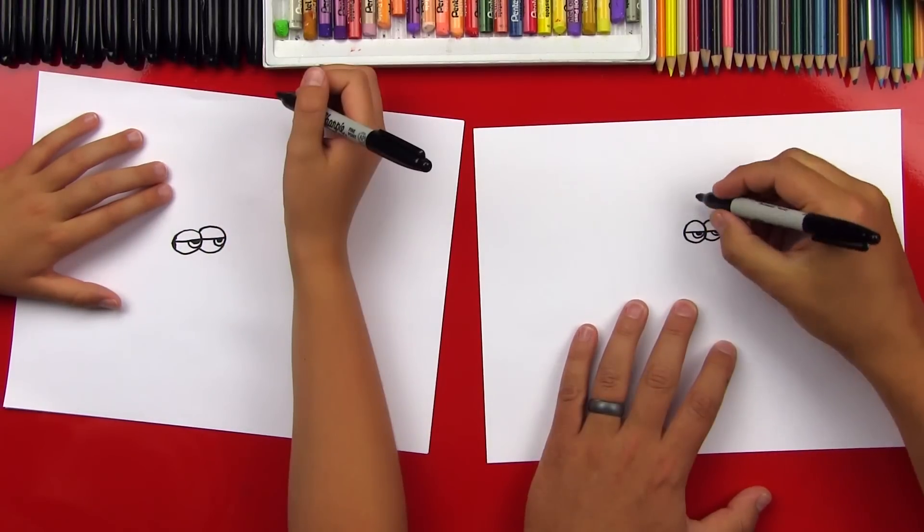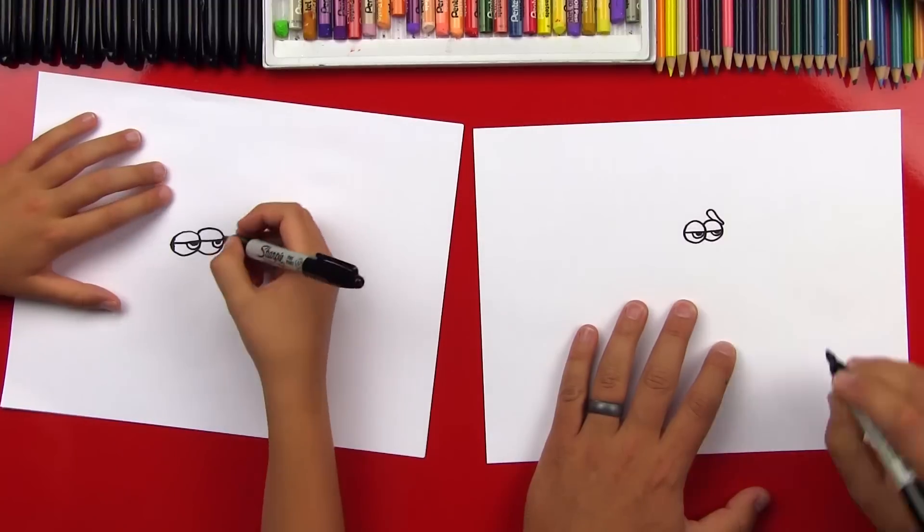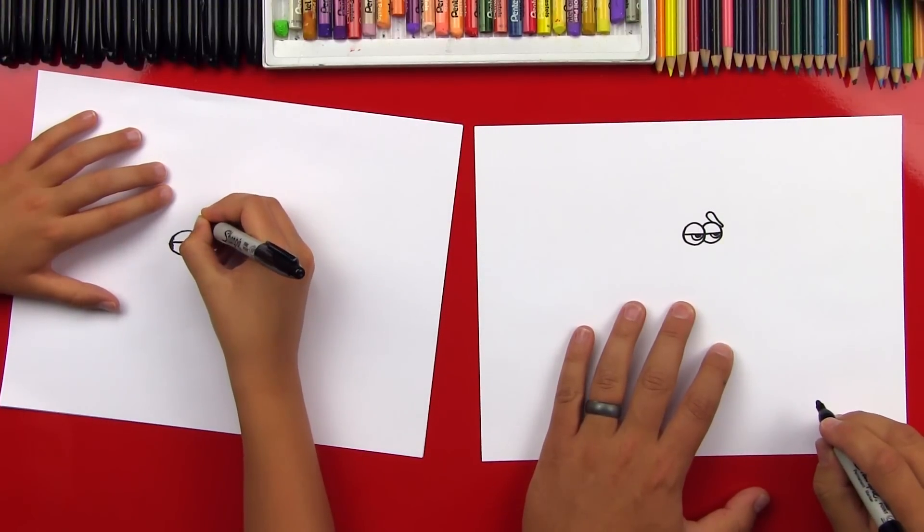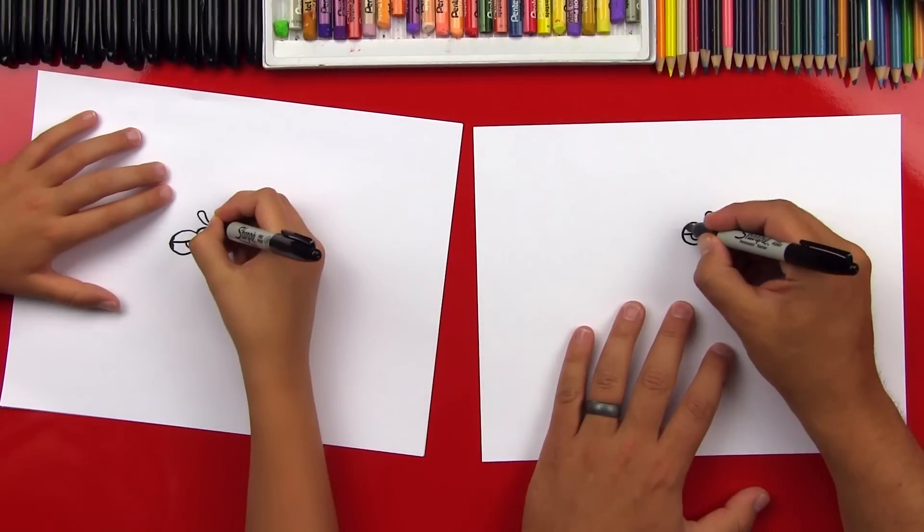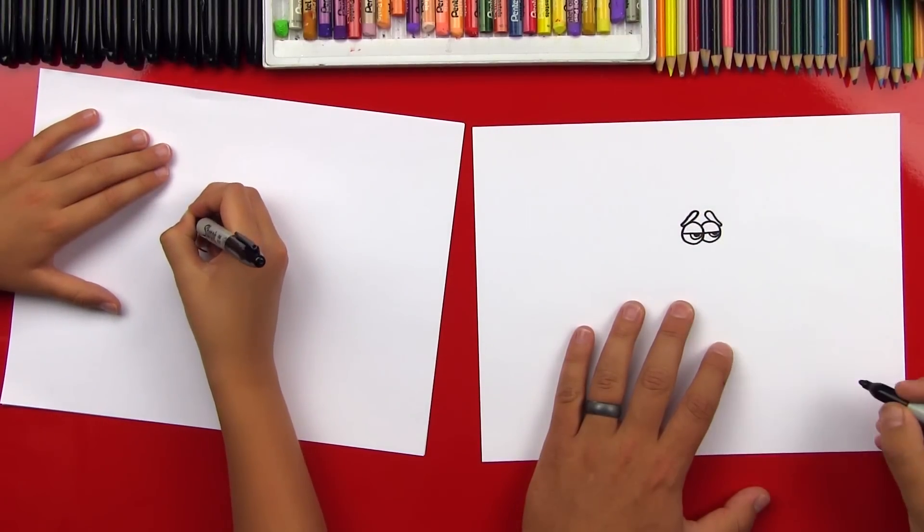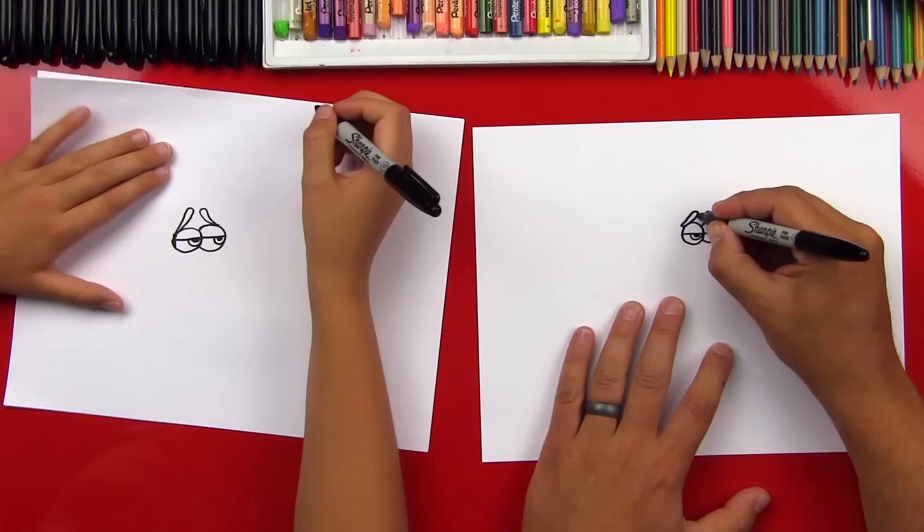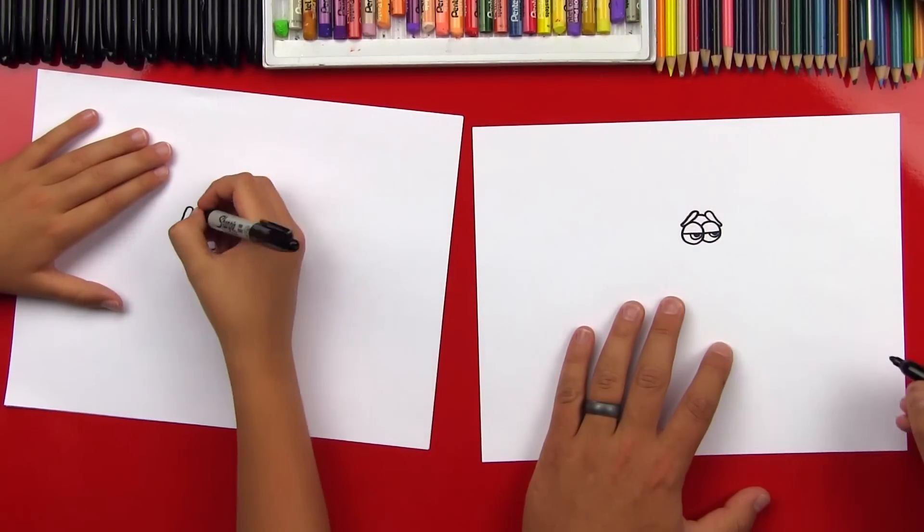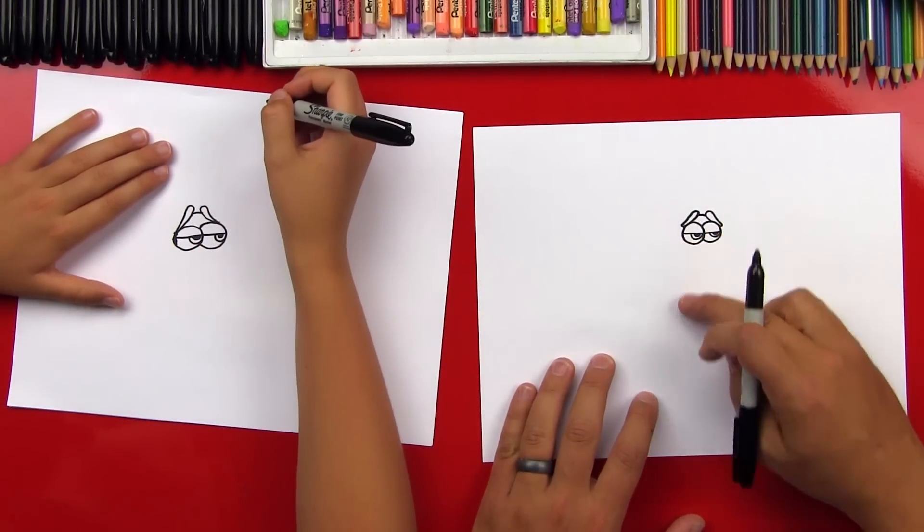Now we're gonna draw his eyebrows, and they're gonna be funny upside down shapes, raindrop shapes. So there's one, and then we're gonna draw the other one on this side. Now we can connect them. If you have a little gap, we can connect in between the eyebrows. That's for the top of his head. Now let's draw his face.